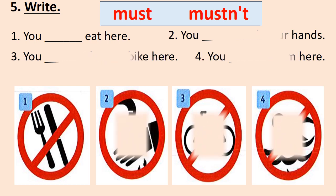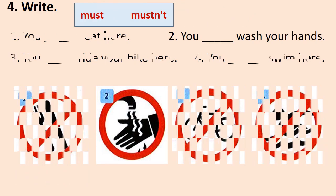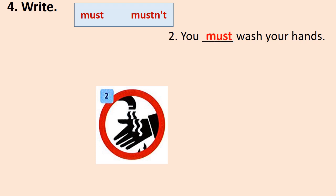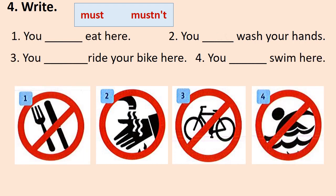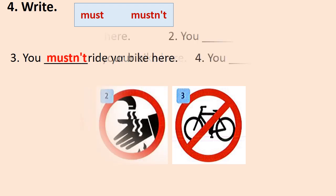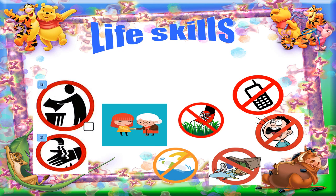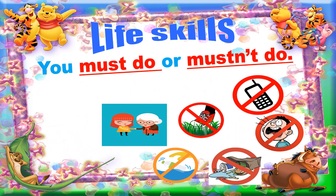Look at exercise number five. You have to write must or mustn't to complete the sentences. Look at the signs please, children. What can you see? We can see something we must do and something we mustn't do.